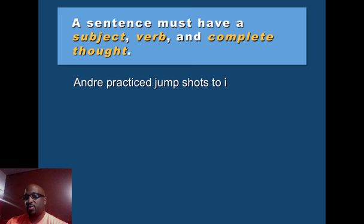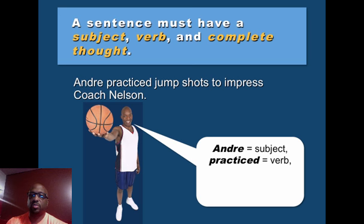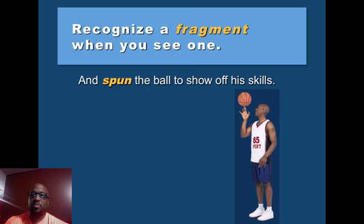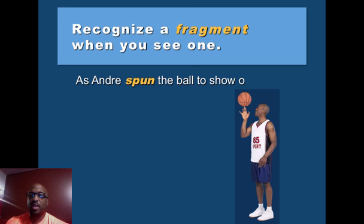A sentence must have a subject, a verb, and a complete thought. 'Andre practiced jump shots to impress Coach Nelson' — Andre is the subject, practiced is the verb, so you have a complete sentence. A fragment is when one of those things is missing. 'Andre spinning the ball to show off his skills' — because 'spinning' doesn't function as a verb here, you have a fragment. You need something in front of spinning, or use past tense: 'spun the ball to show off his skills.'